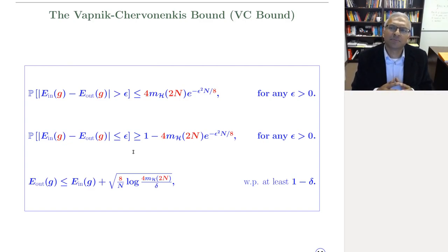And this generalization bound is so famous that it has a name. It's called the Vapnik-Chervonenkis bound or the VC bound. I'm just going to go through the error bar version, which is a little bit easier to parse.